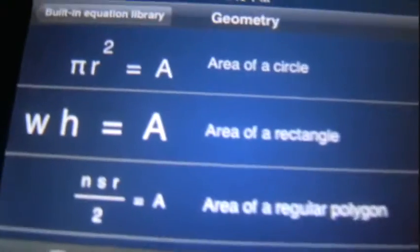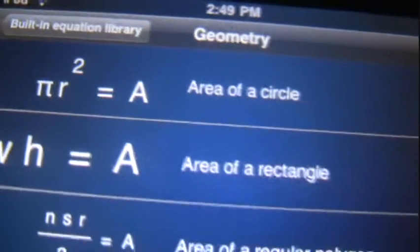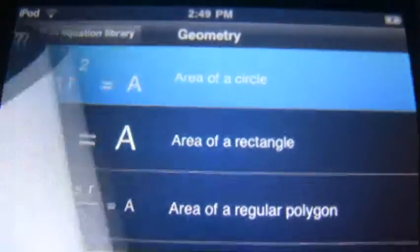And for example, area of a circle, pi r squared equals A. Area of a circle. And so you hit that and it'll tell you there.